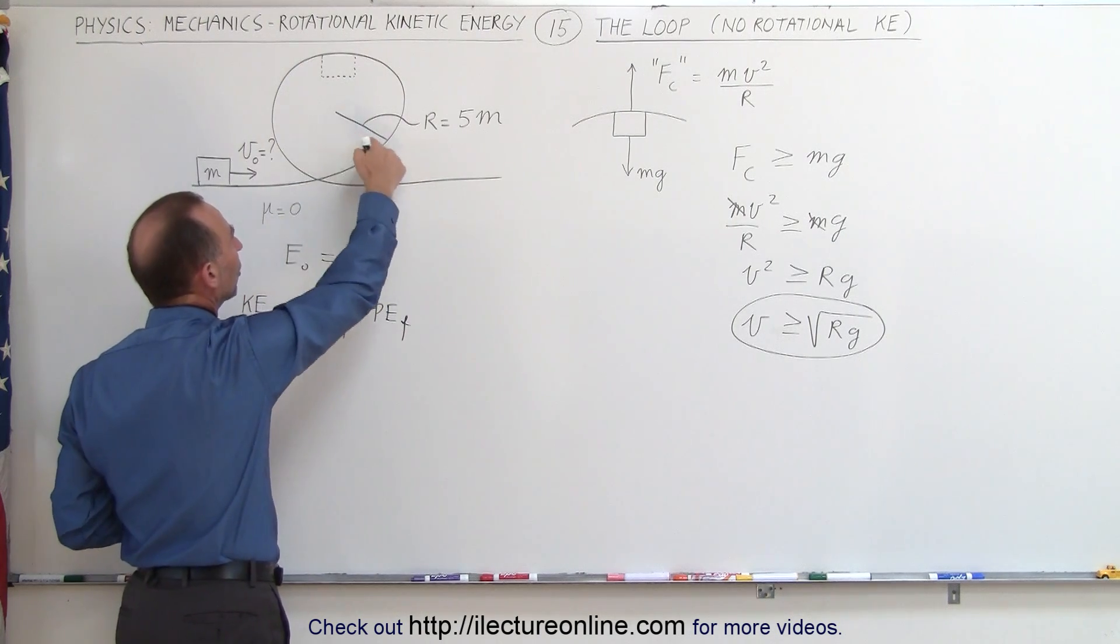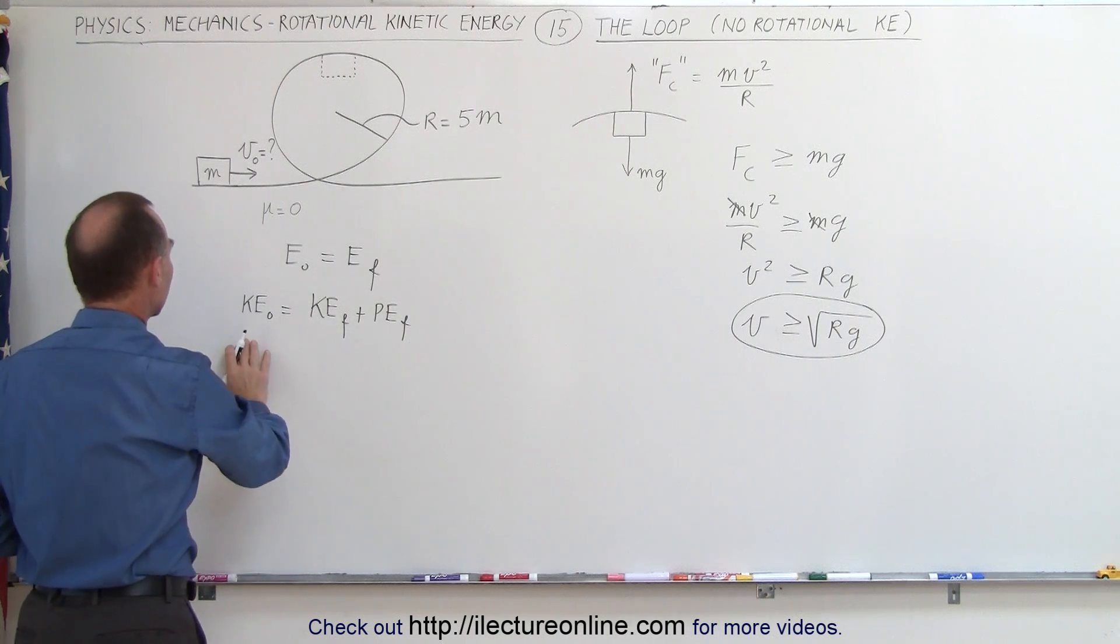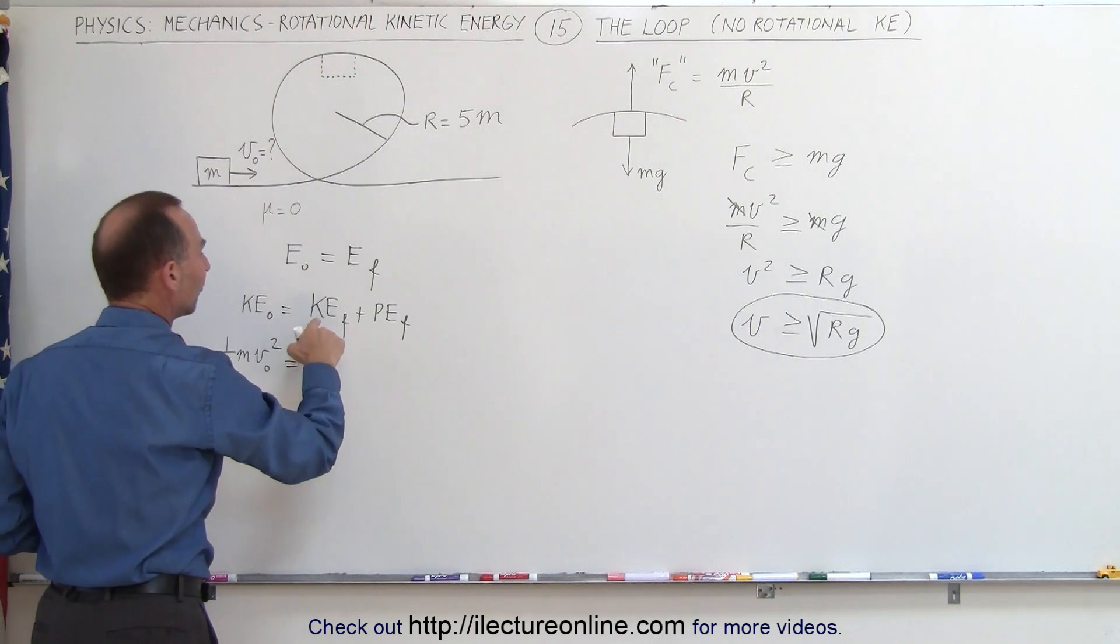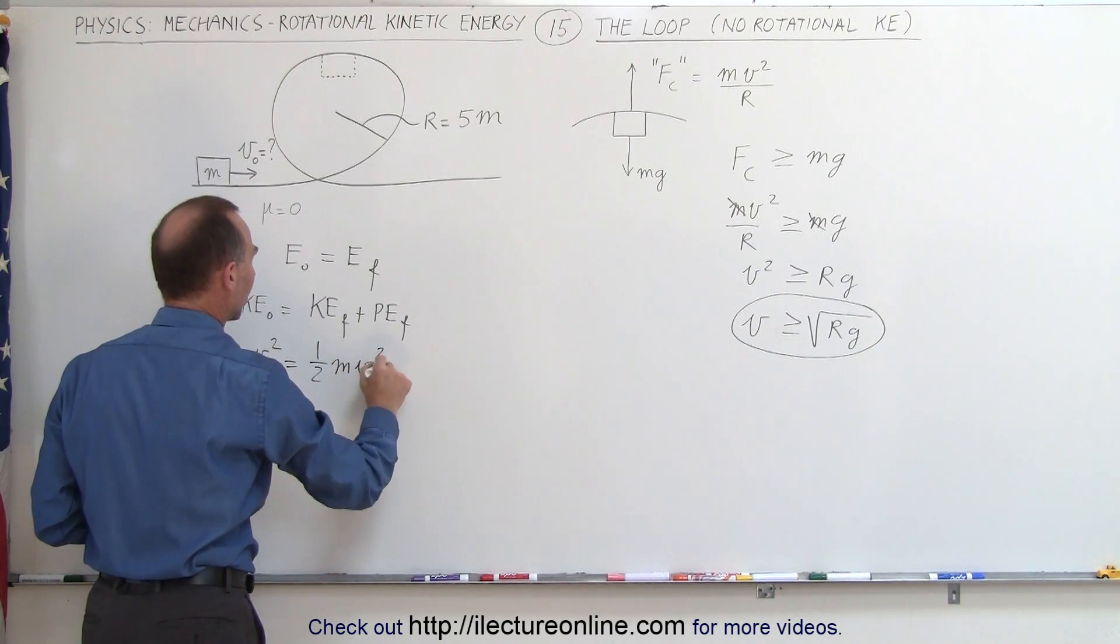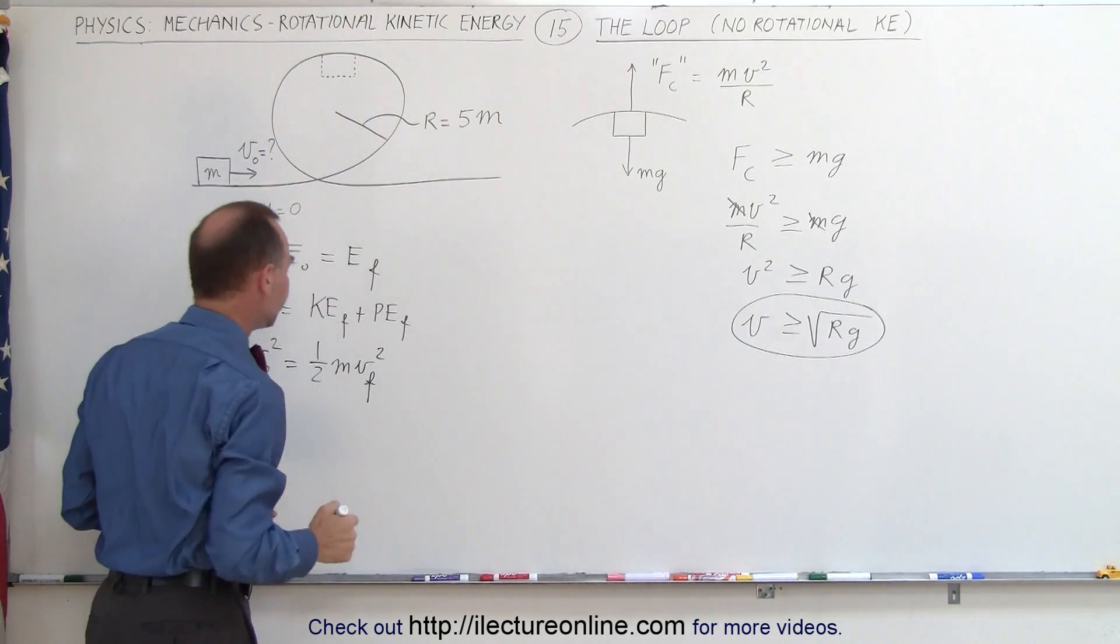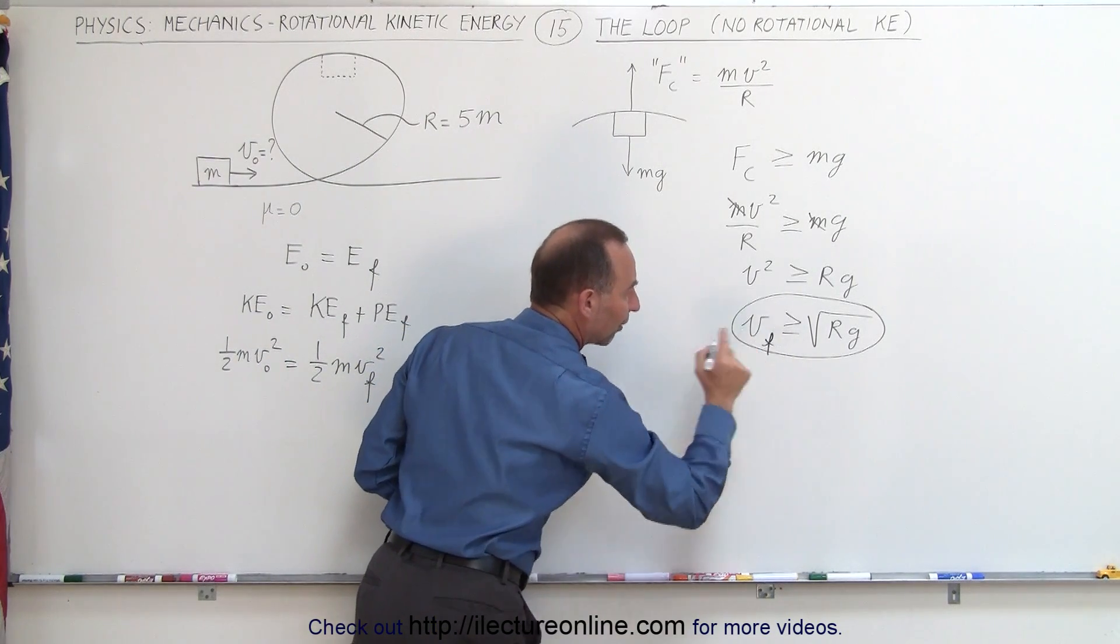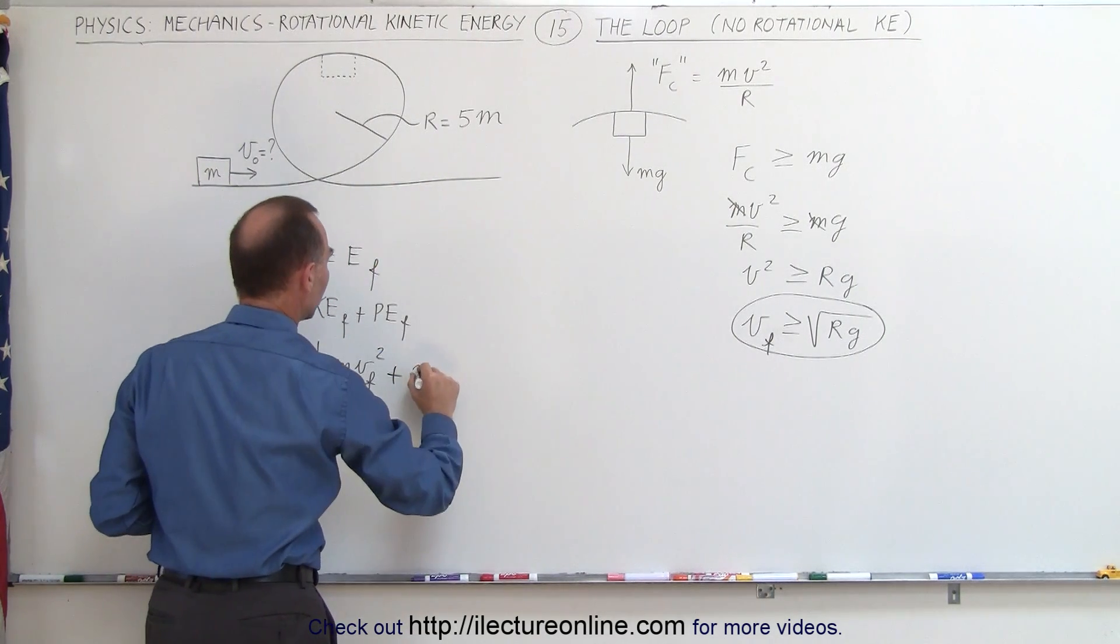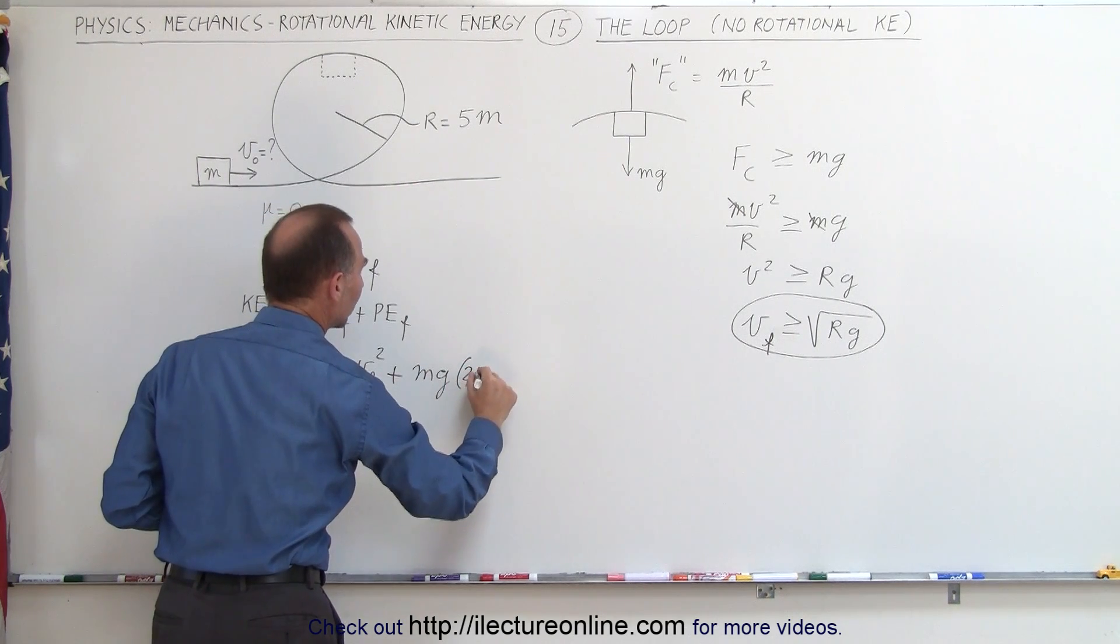Notice that the radius of the loop is r, that means that the height of the loop will be two times the radius or 2r. The initial kinetic energy would be one half mv initial squared, and that's what we're looking for. This equals the final kinetic energy, which would be one half mv final squared, the velocity at the top, plus the potential energy, which is mg times h. In this case h will be twice the radius, so mg times 2r.